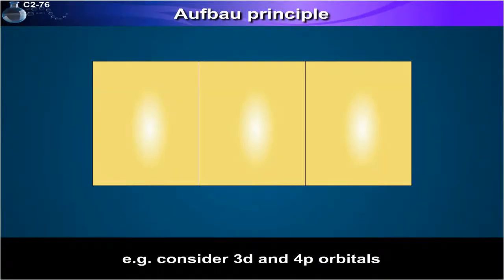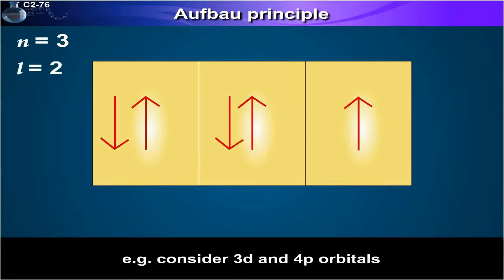For 3d, n is equal to 3 and l is equal to 2. Hence n plus l is equal to 3 plus 2 is equal to 5.